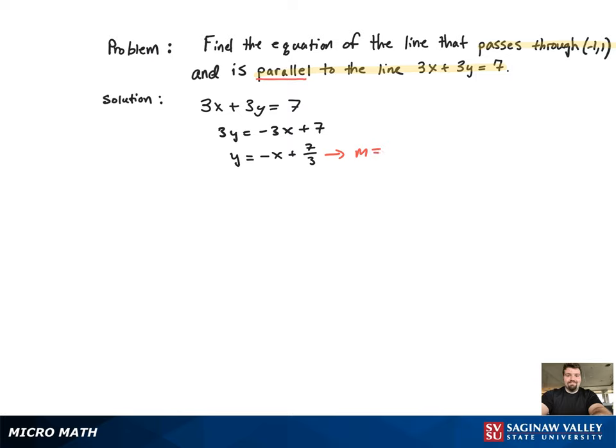So that's going to be the slope of our line. Now we're going to start with the generic equation of a line, y equals mx plus b. We just figured out m was equal to negative 1, so we're going to plug that into that equation.